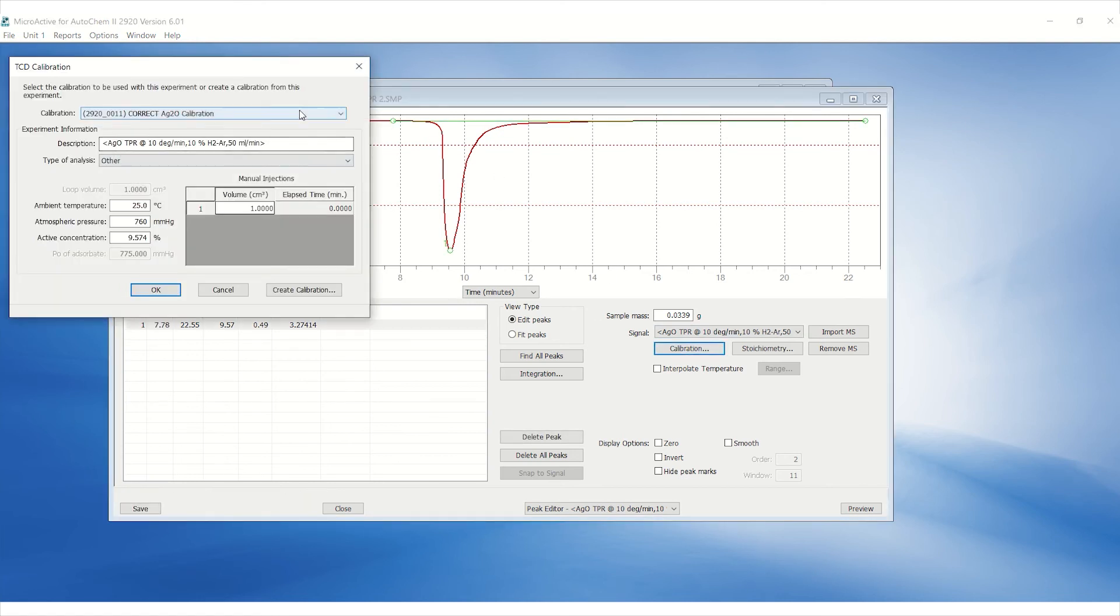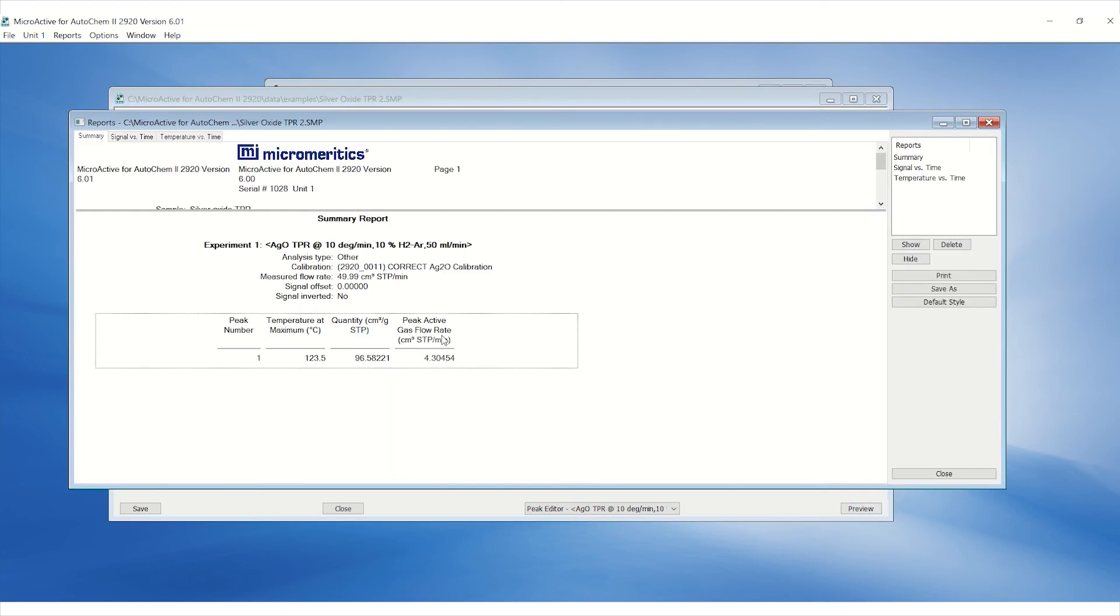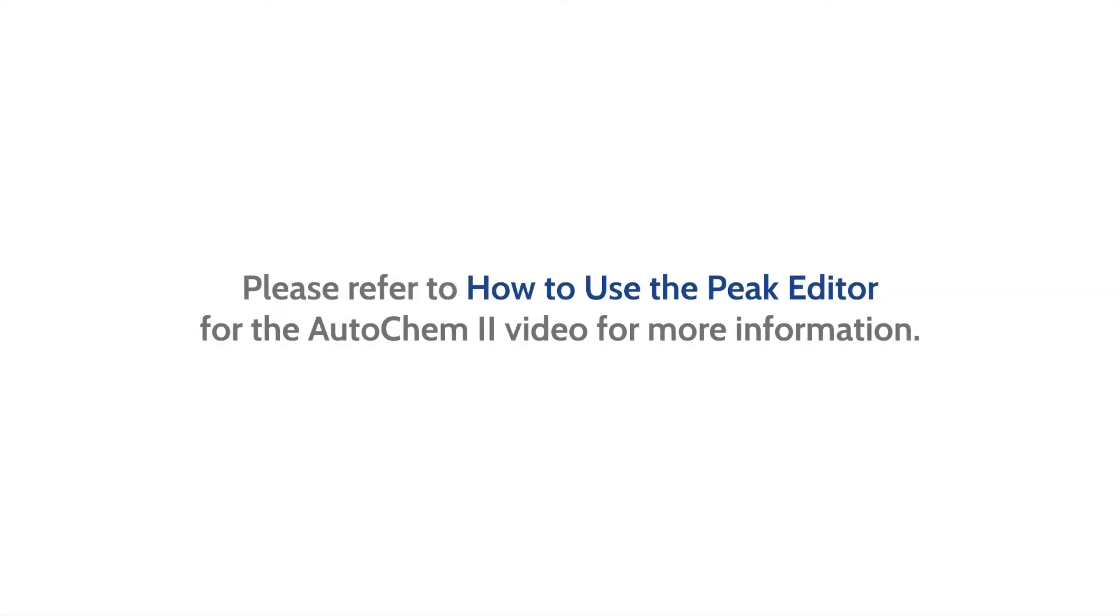Ensure to apply the appropriate calibration file. Click on Preview on the sample file to display the report. Verify if the reduction temperature and the hydrogen consumption are within specifications indicated on the reference material manual. Please refer to our How to Use the Peak Editor for the AutoChem 2 video for more information.